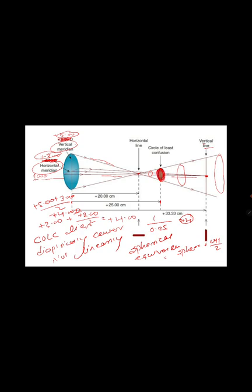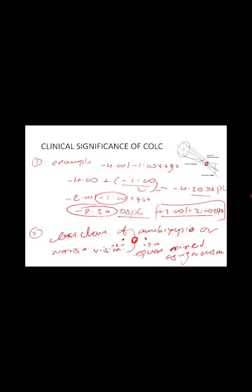To summarize: the Circle of Least Confusion lies at the dioptric center, not the linear center, and it gives the best possible image in the case of a sphero-cylindrical lens. The spherical equivalent is the same as the Circle of Least Confusion position. In clinical practice, when you prescribe a spherical equivalent, you are placing the Circle of Least Confusion at the retina to achieve the best image possible. Thank you so much for listening, and I'll meet you in the next video.